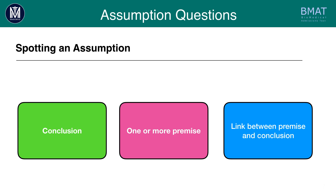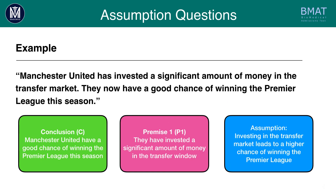So how do we spot an assumption? A basic argument has a conclusion, one or more premises, and a link between the premise and the conclusion. A premise is a proposition or reason given to support a suggested argument or conclusion. For example: 'Manchester United have invested a significant amount of money in the transfer market. They now have a good chance of winning the Premier League.' The conclusion is that they have a good chance of winning the Premier League; the premise is the investment in the transfer market. Even if you know a lot about football, you're still making an unstated assumption: that spending money in the transfer market helps boost your chances of winning the Premier League.